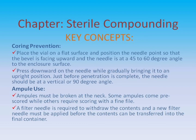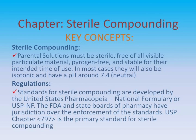Ampule use: ampules must be broken at the neck. Some ampules come pre-scored, while others require scoring with a fine file. A filter needle is required to withdraw the contents, and a new filter needle must be applied before the contents can be transferred into the final container. Sterile compounding: parenteral solutions must be sterile, free of all visible particulate material, pyrogen-free, and stable for their intended time of use. In most cases they will also be isotonic and have a pH around 7.4, or neutral.